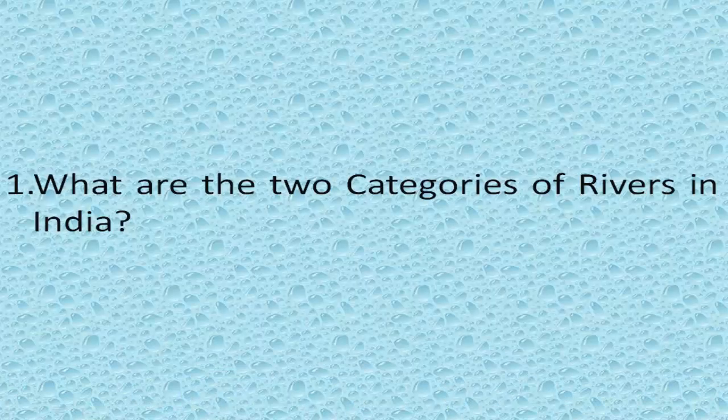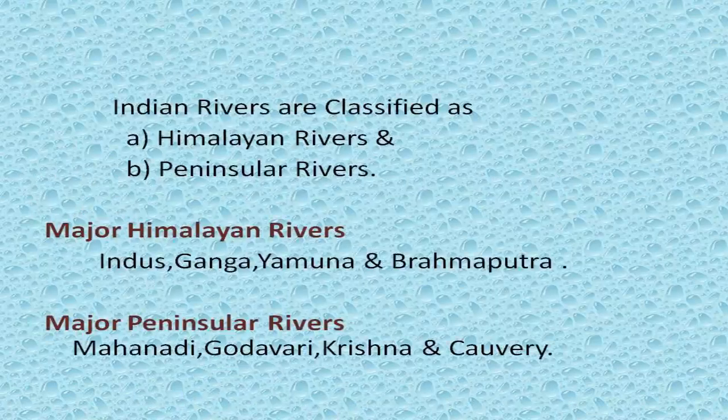What are the two categories of rivers in India? Indian rivers are classified as Himalayan rivers and Peninsular rivers. Major Himalayan rivers are Indus, Ganga, Yamuna and Brahmaputra.